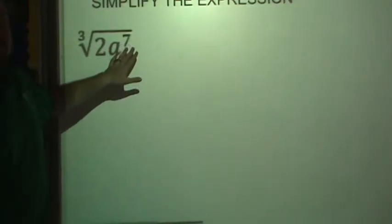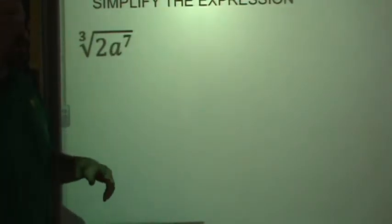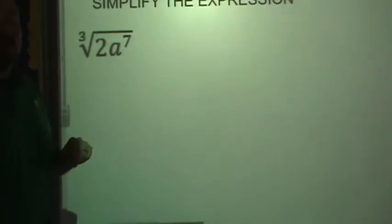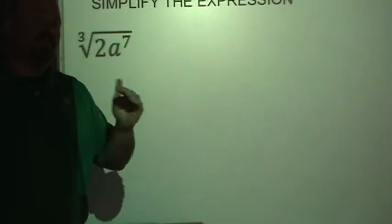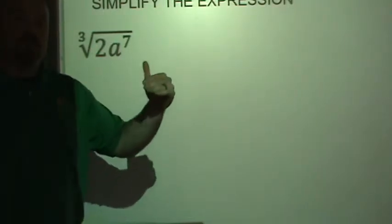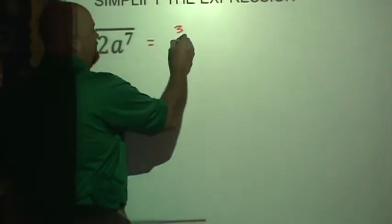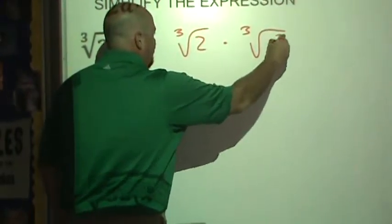Notice that underneath this radical there's a product that also includes a power. So I've got 2 times a to the 7th. And any time you have a product under a radical, you can separate that into two separate radicals. So this is the same as the cubed root of 2 times the cubed root of a to the 7th.